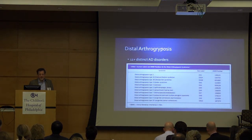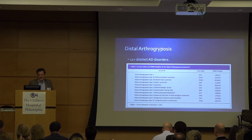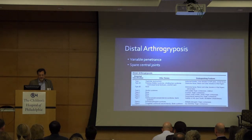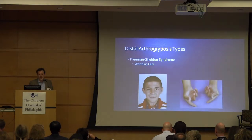There's distal arthrogryposis, which is mostly autosomal dominant. There are some autosomal recessive disorders, and this list keeps growing — this is from a paper now about 10 years old, but the list is probably up to 14 now. There's variable penetrance and it tends to spare the central joints, hence the name distal arthrogryposis.